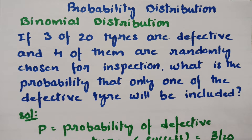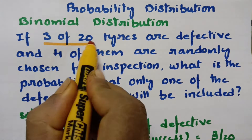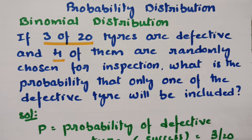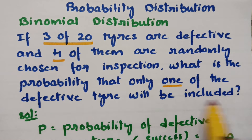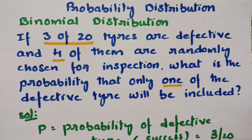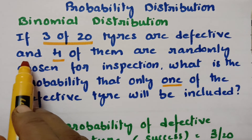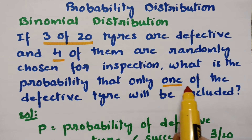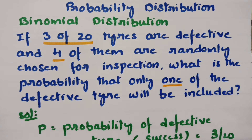Today's problem is related to the binomial distribution from probability distribution. The question is: if 3 of 20 tires are defective and 4 of them are randomly selected for inspection, what is the probability that only one of the defective tires will be included? Here N is equal to 4.